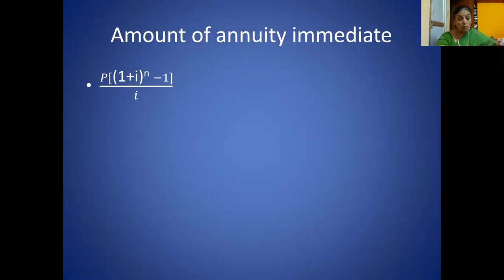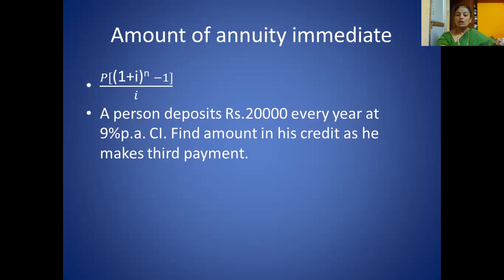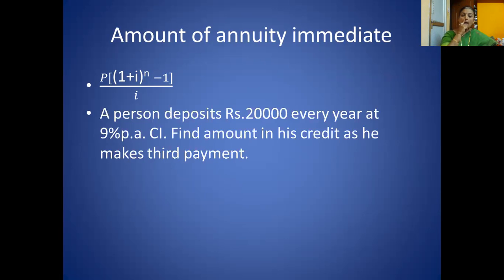Problem 1: A person deposits rupees 20,000 every year at 9% per annum compound interest. Find the amount in his credit as he makes the 3rd payment. When the question asks about a specific payment number — 3rd, 4th, 6th, 7th — we have to use the annuity immediate formula.